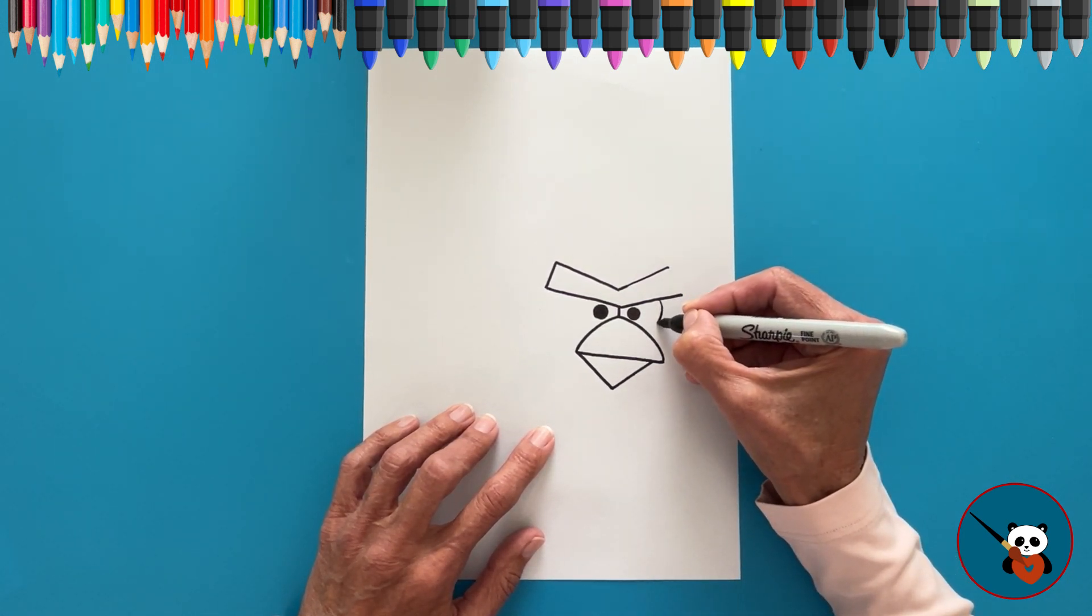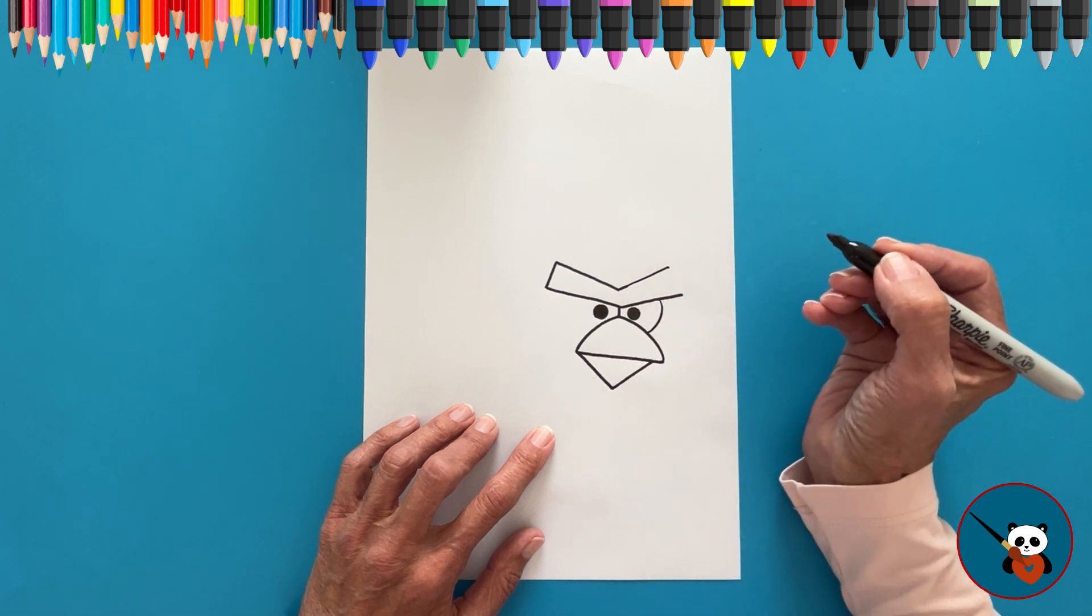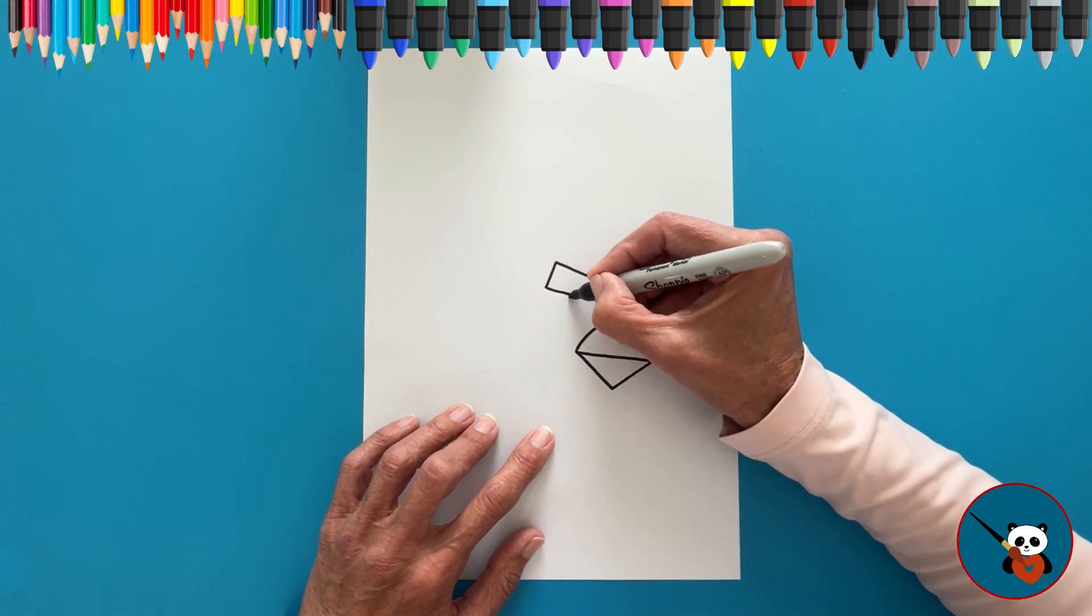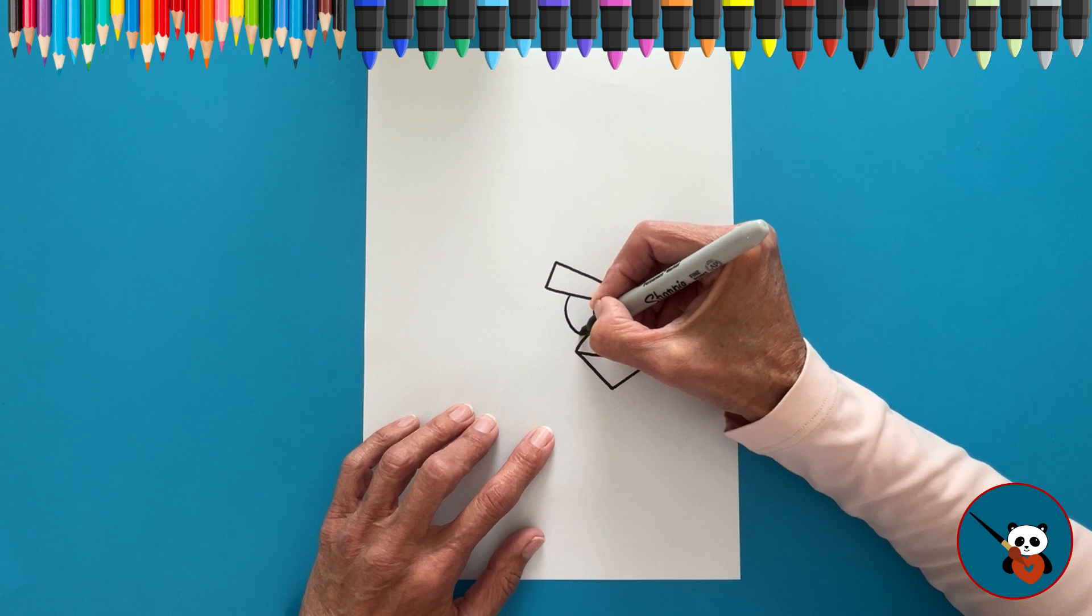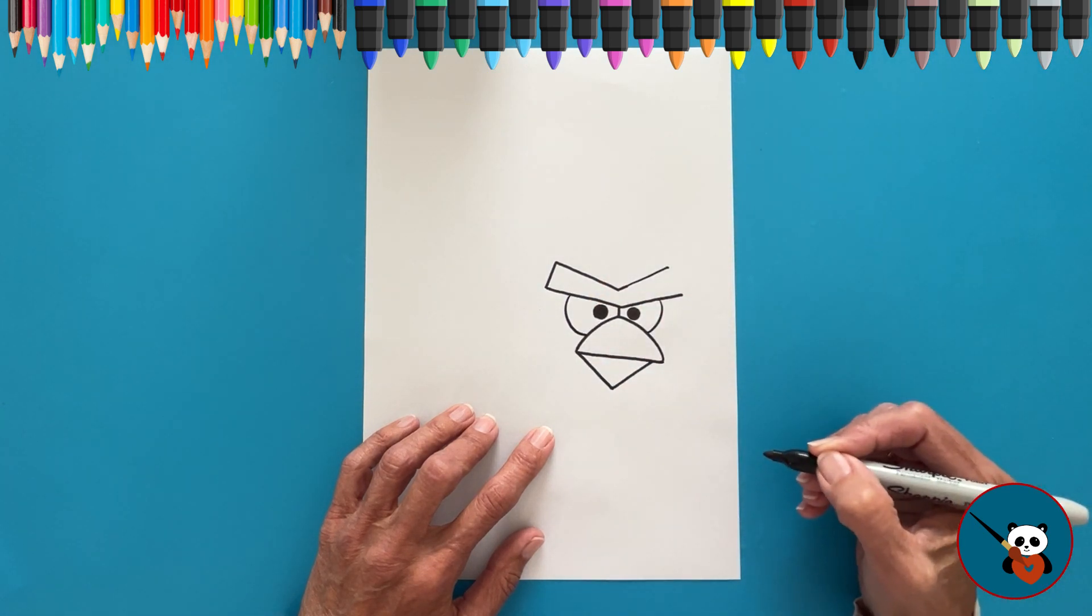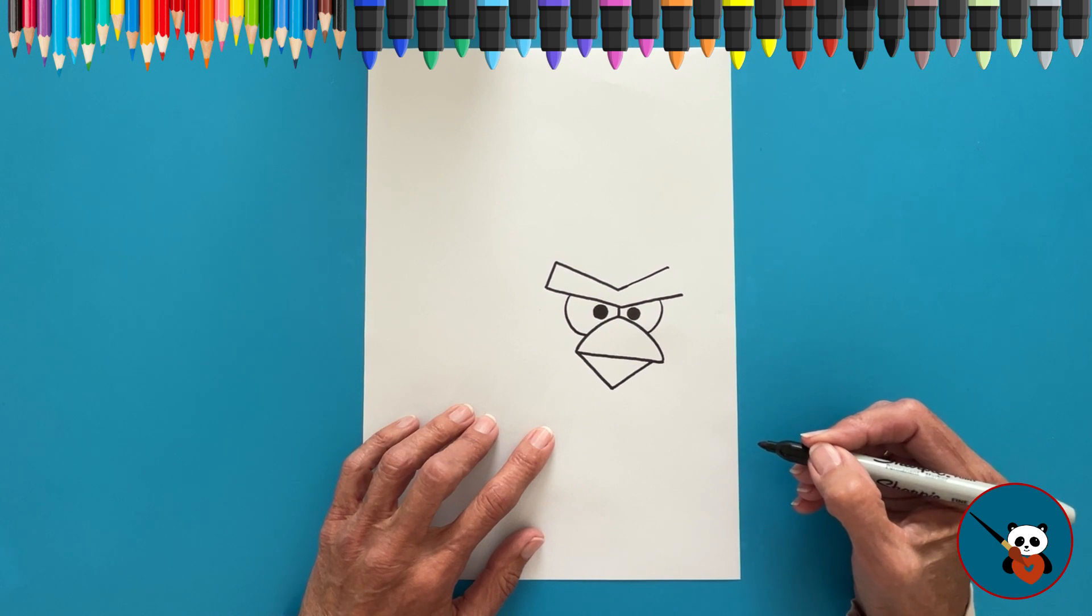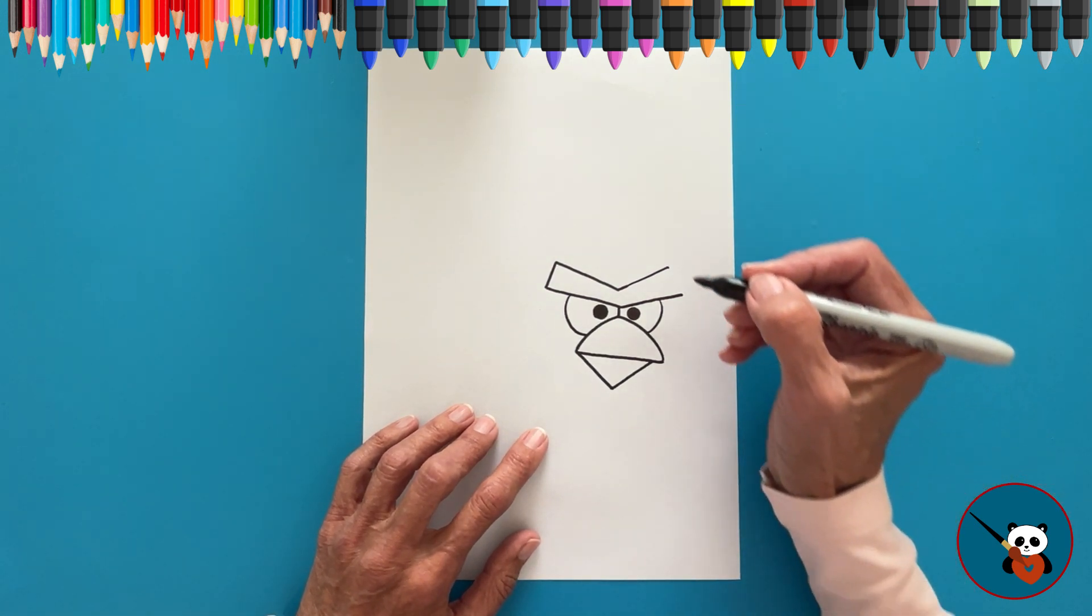Now, to complete the eye, add a curved line around the black circle. Repeat for the other eye. Awesome job so far! You got that fierce look that Red has.